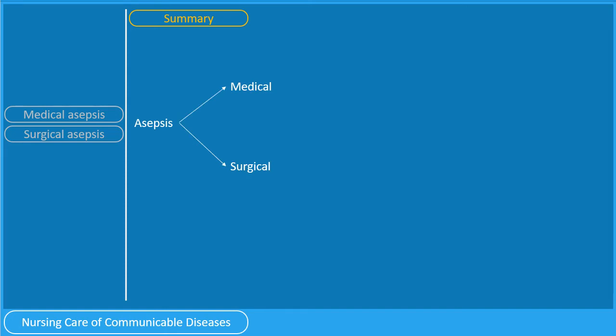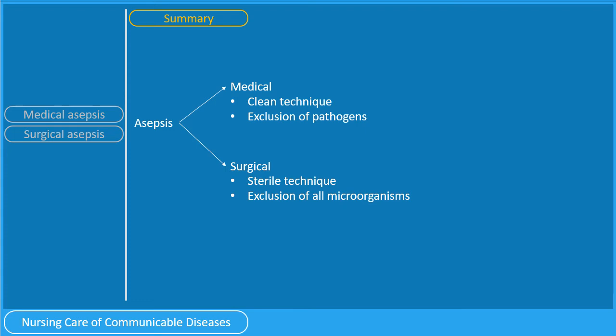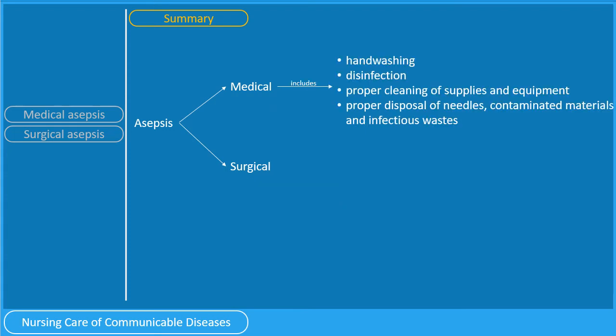Let us summarize the concept of asepsis. It could either be medical or surgical asepsis. Medical asepsis is a clean technique while surgical asepsis is a sterile technique — meaning exclusion of all microorganisms for surgical, and exclusion of pathogens for medical. Medical asepsis includes hand washing, disinfection, proper cleaning of supplies and equipment, and proper disposal of needles, contaminated materials, and infectious waste. The sterile technique is done in operating rooms, labor and delivery rooms, and special diagnostic areas.